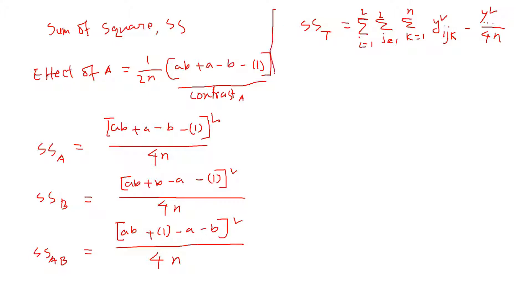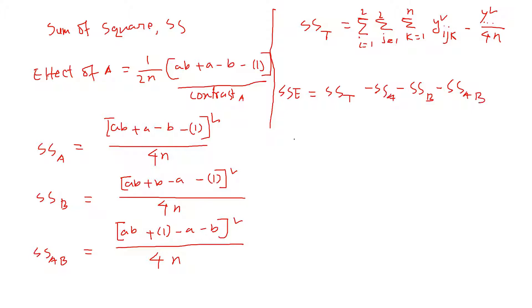The sum of squares for error is then the total sum of squares minus the variation due to A, minus the variation due to B, minus the variation due to AB. From this, we can create an ANOVA table.